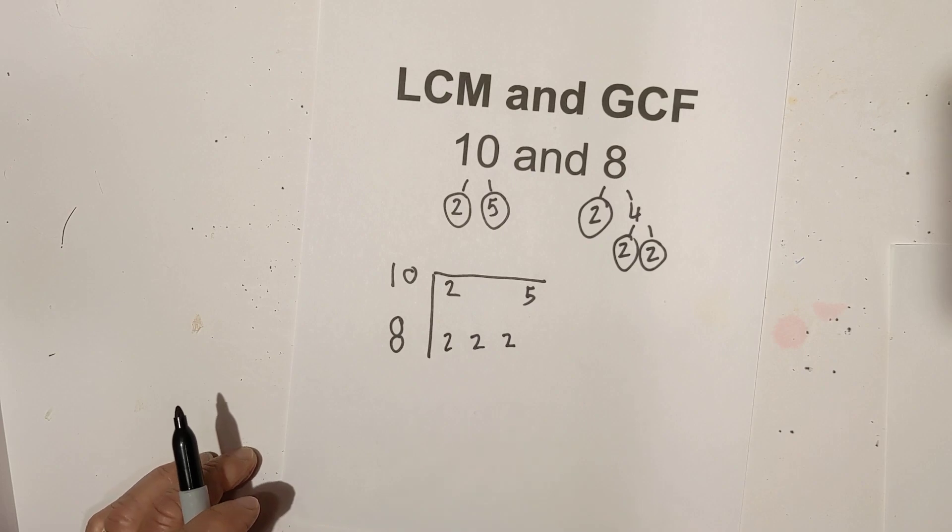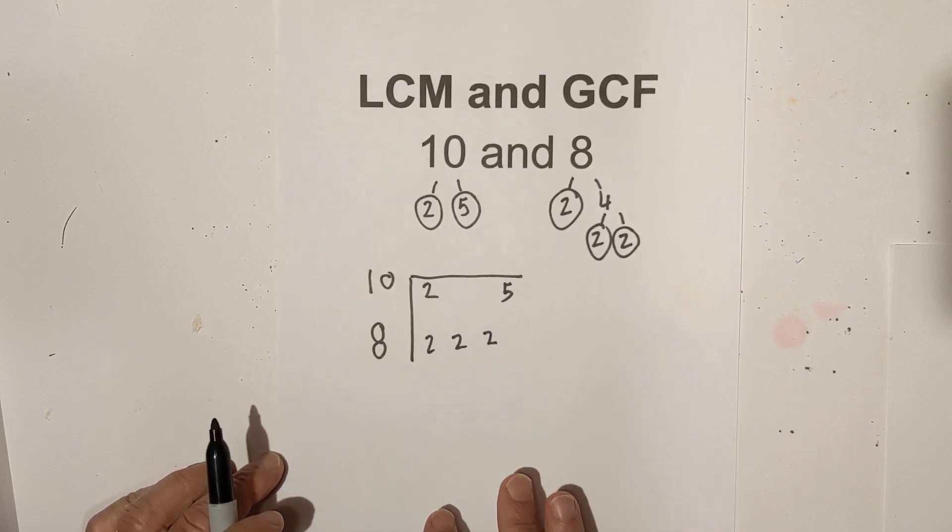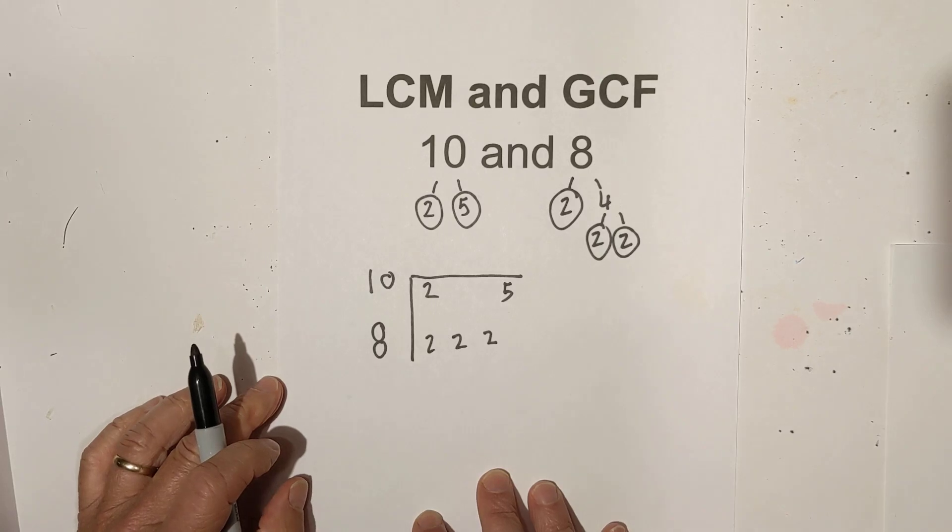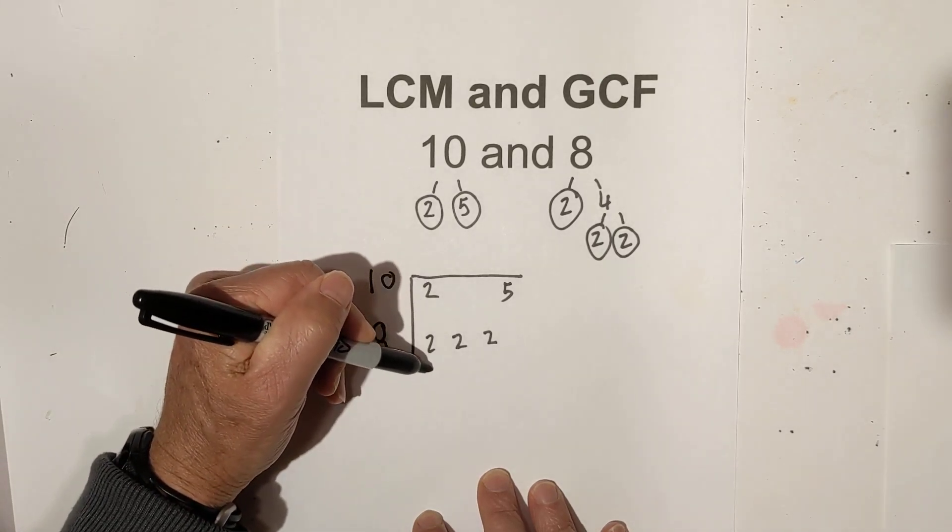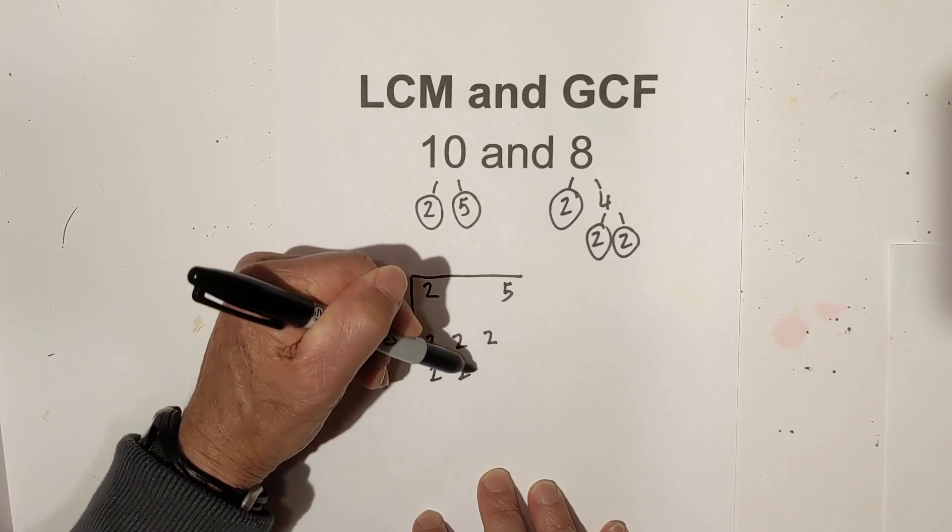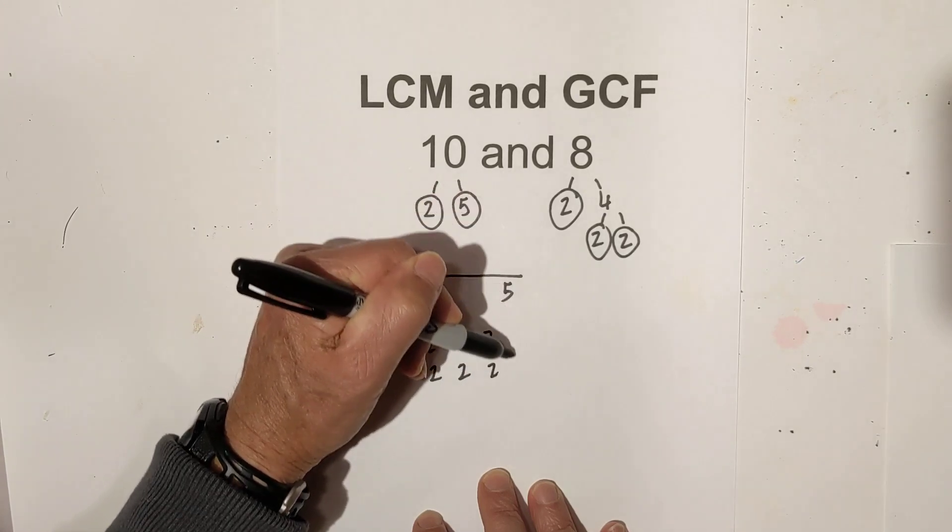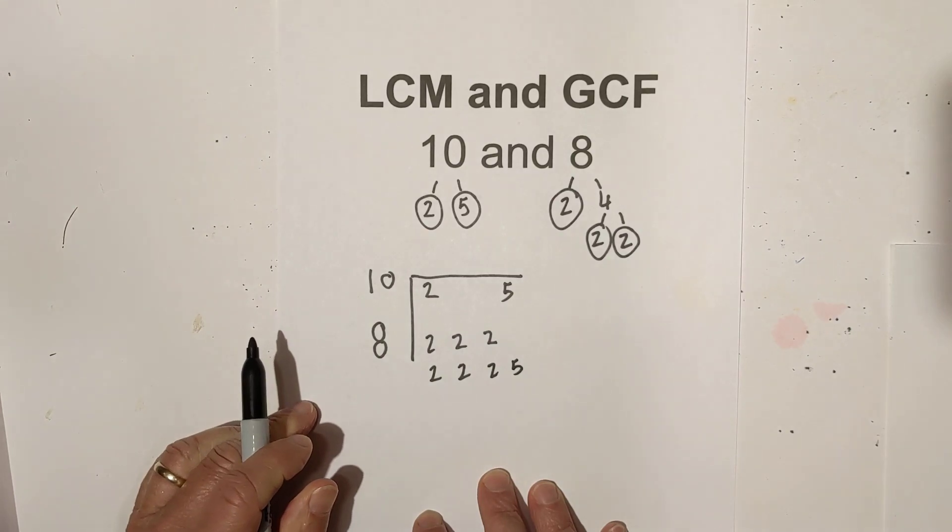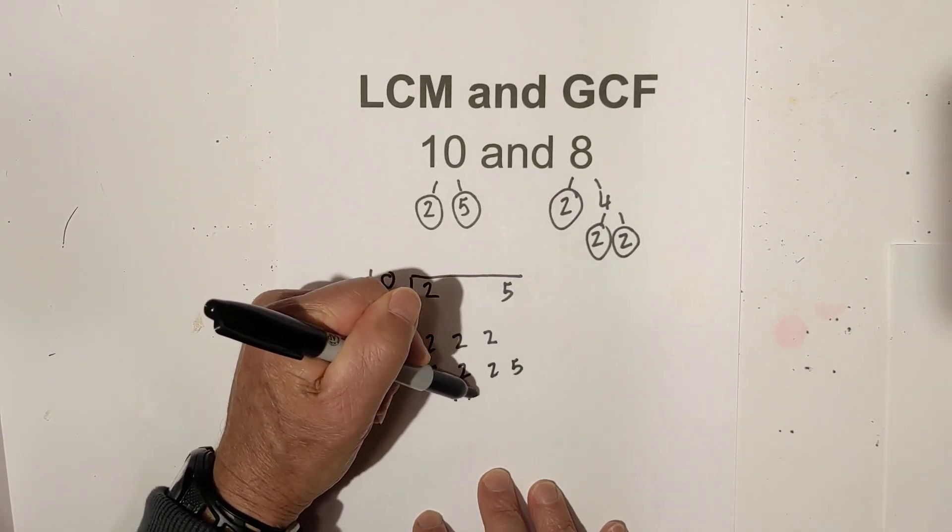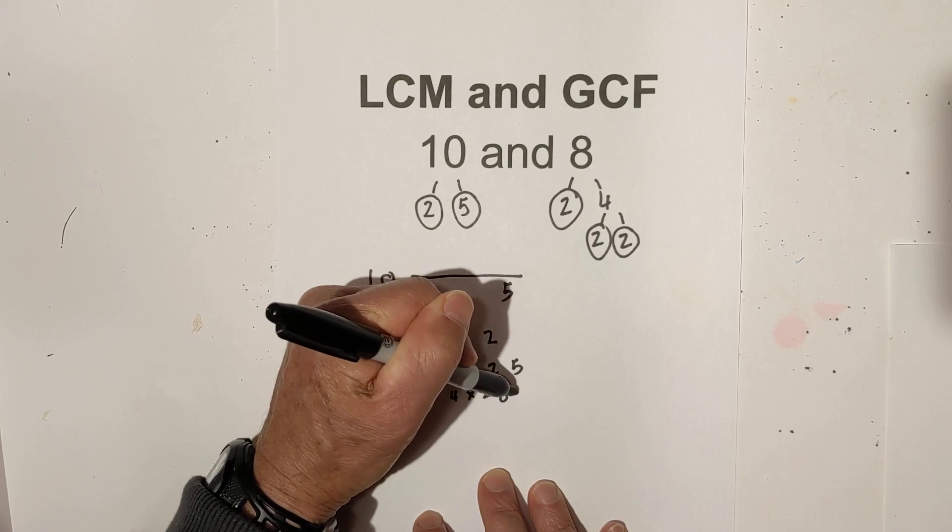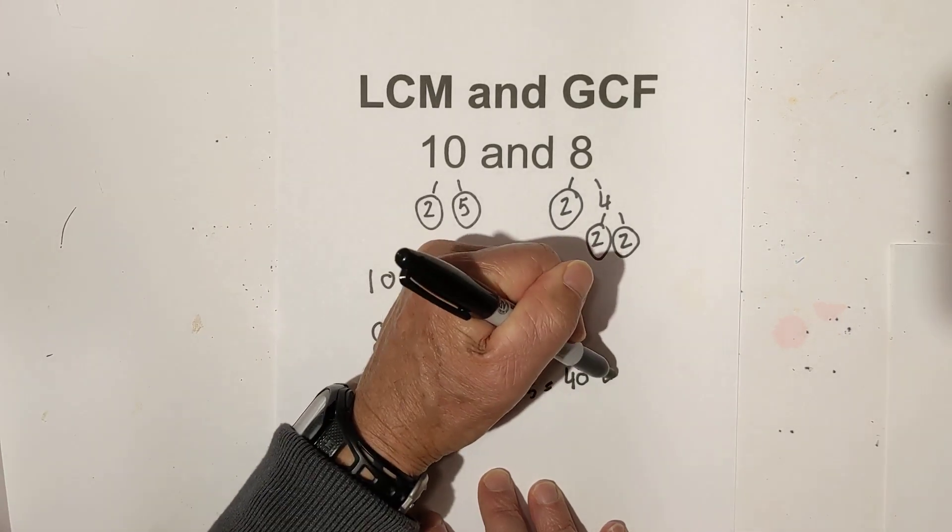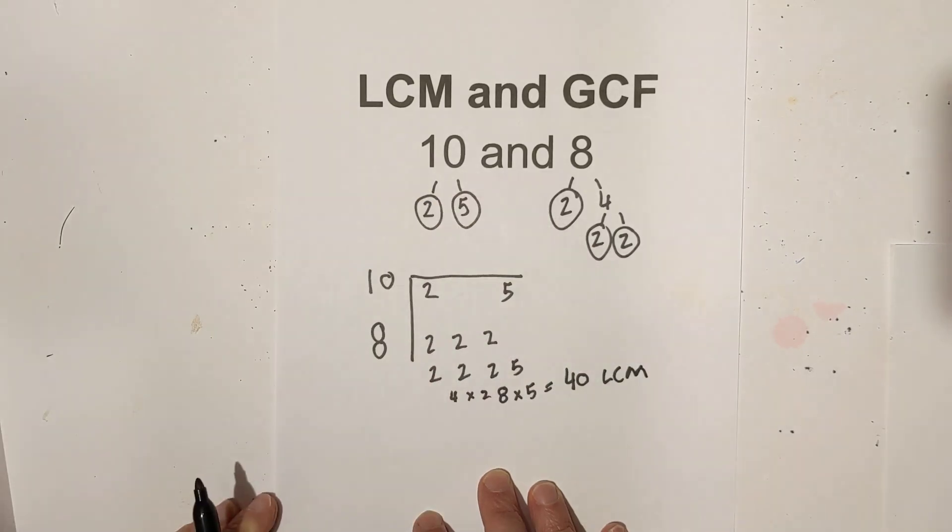Now for the LCM, what you do is multiply these numbers together but follow this rule: if you have a pair, only bring down one number. So I'm going to bring down one number here, I've got a 2 here, 2 here, bring down the 5. I then just multiply this together. This is 2 times 2 is 4, 4 times 2 is 8, and 8 times 5 equals 40. So the LCM, lowest common multiple, is 40.